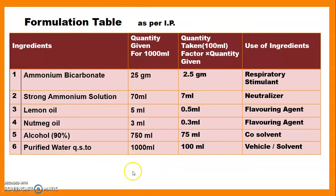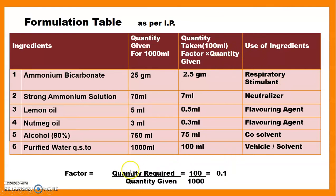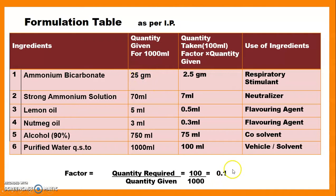Our formula is given for 1000 ml but we need to calculate for only 100 ml. The factor is calculated as quantity required divided by quantity given: 100 ml divided by 1000 ml equals 0.1. Multiplying each ingredient by this factor gives the quantity taken. For example, ammonium bicarbonate: 25 g × 0.1 = 2.5 g.